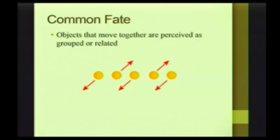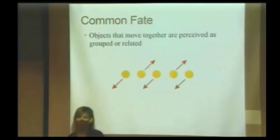If you have these three circles moving in one direction and those two circles moving in another direction, you're going to interpret it as being two groups. Why? Because they have a common fate. They are moving together.